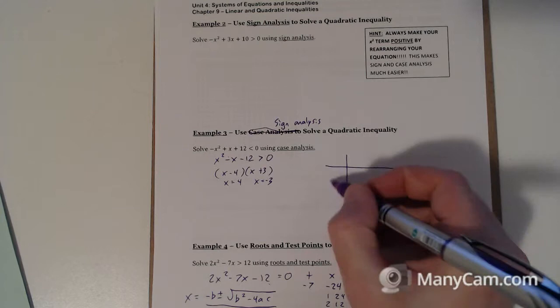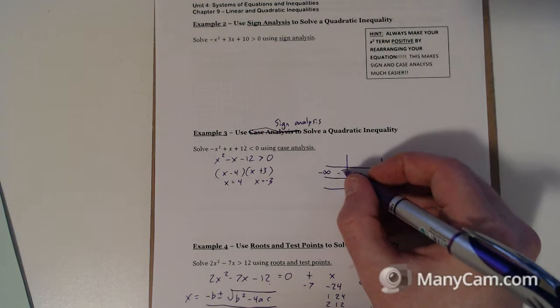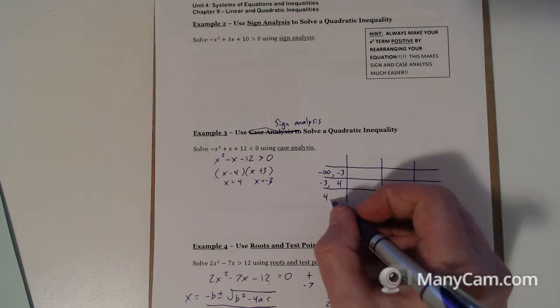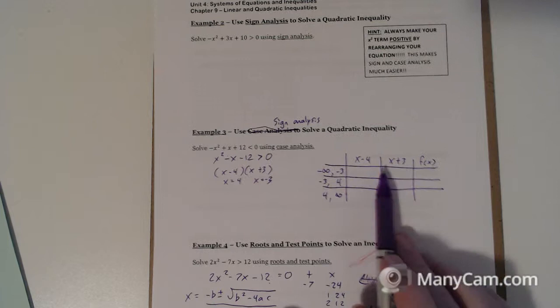So we set up our table. Over here, you start at negative infinity and you go to your first point, which is negative 3. Then you go from your first point, negative 3, to your second point, 4. Then you go from your second point to positive infinity. And up here, you put your two factors, x minus 4 and x plus 3. And then you get to the entire function by multiplying those two things together.